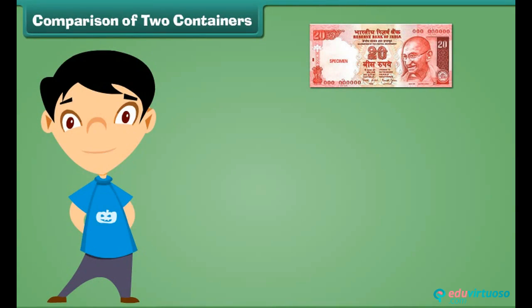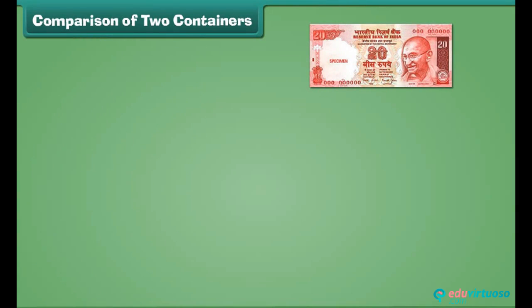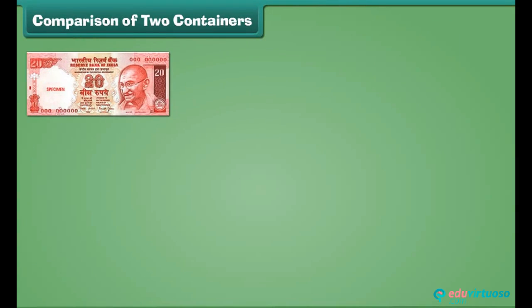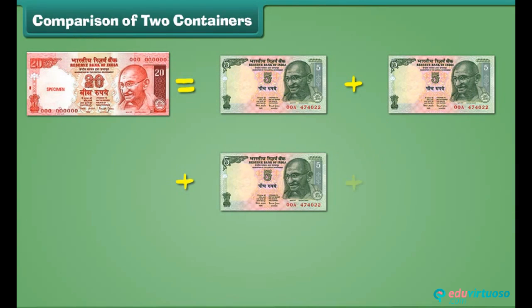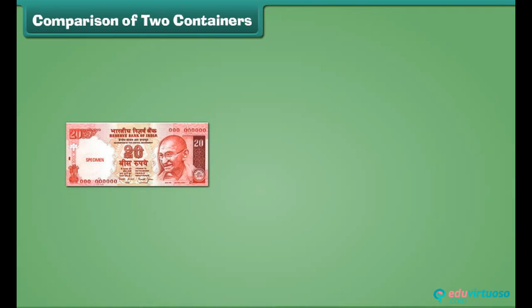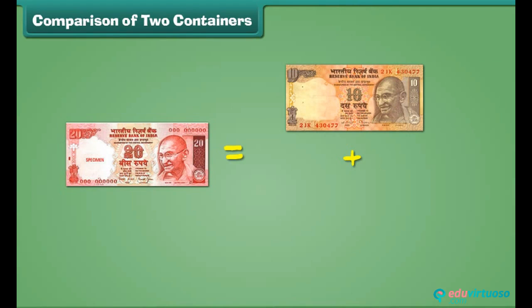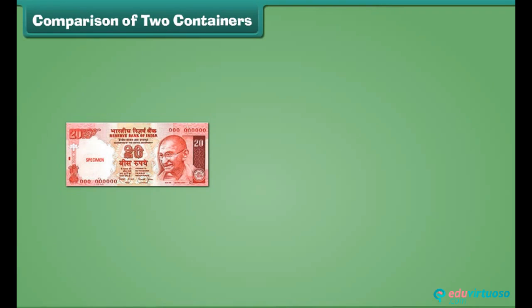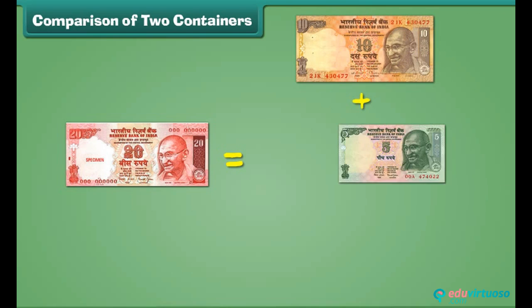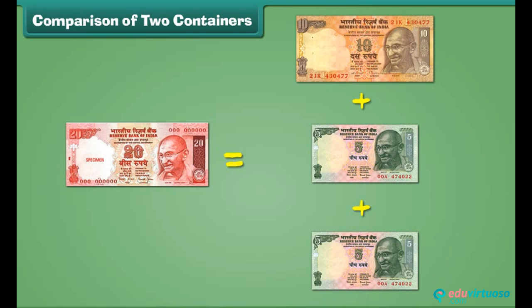This is a 20 rupee note. A 20 rupees note is equal to the sum of 4 five-rupee notes. A 20 rupees note is equal to the sum of 2 ten-rupee notes. A 20 rupees note is also equal to the sum of 1 ten-rupee note and 2 five-rupee notes.